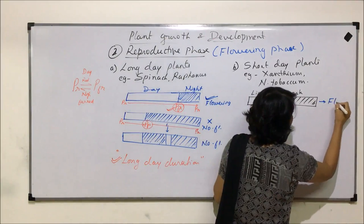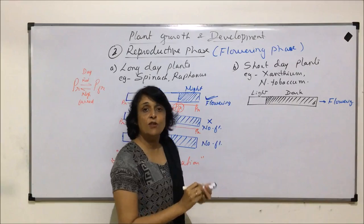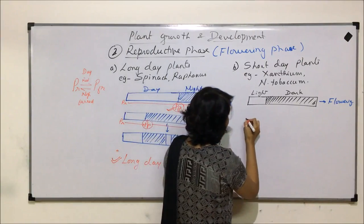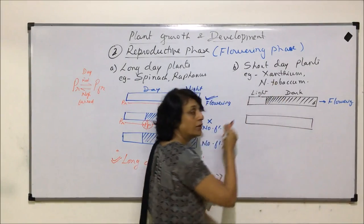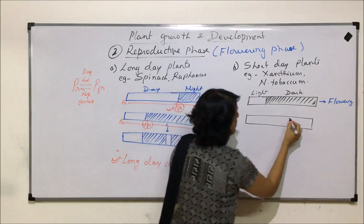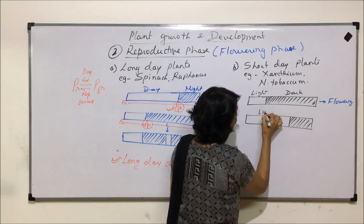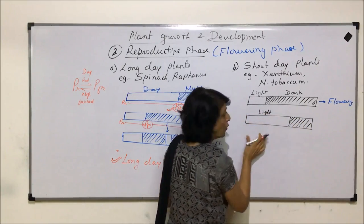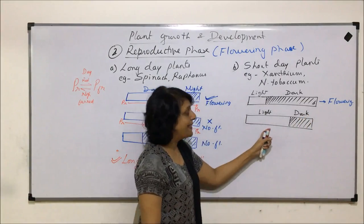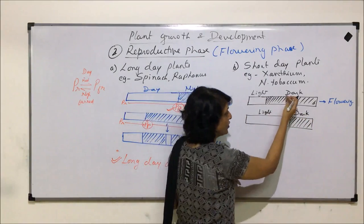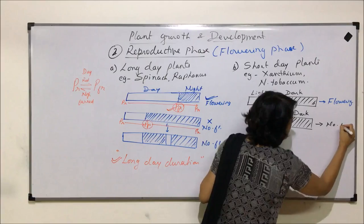In this condition, the short day plant should produce flowering, and it does produce flowering. Now we change the situation. Suppose we reverse it — we provide a long light period, that is a long photoperiod, and a short dark period. Because this is just opposite of the requirement, in this case there is no flowering.